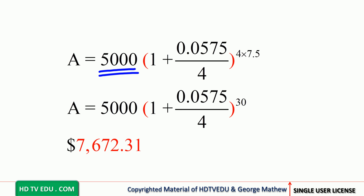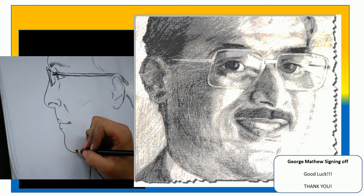To recap: P is five thousand, r is five point seven five percent converted to zero point zero five seven five, n is four (quarterly), and t is seven point five years. Substituting all those numbers gives us seven thousand six hundred seventy two point thirty one. This is George Matthew signing off — good luck.